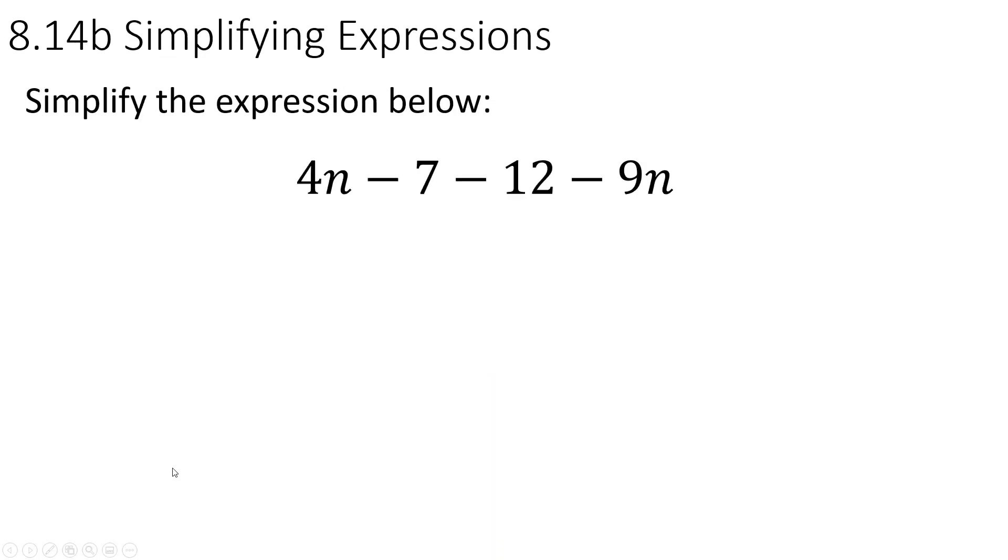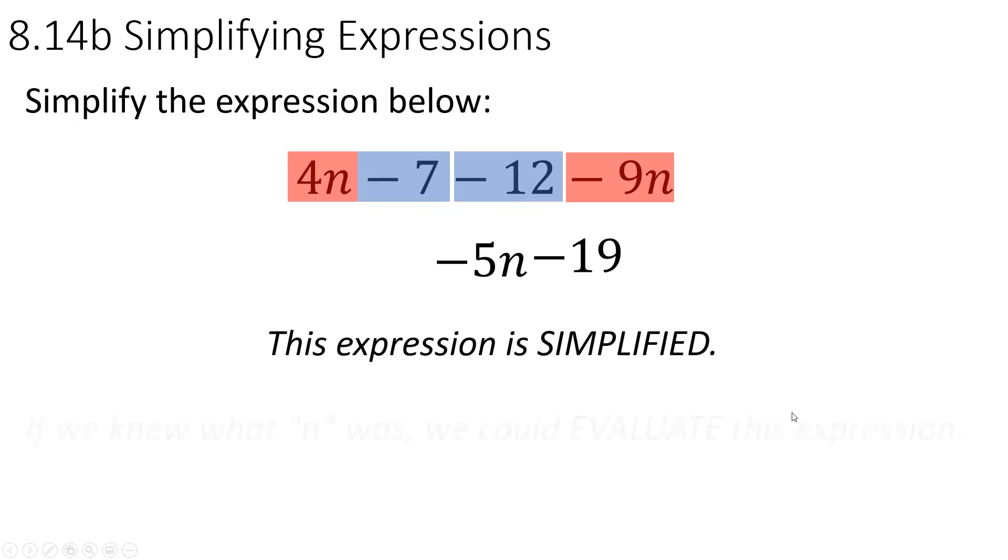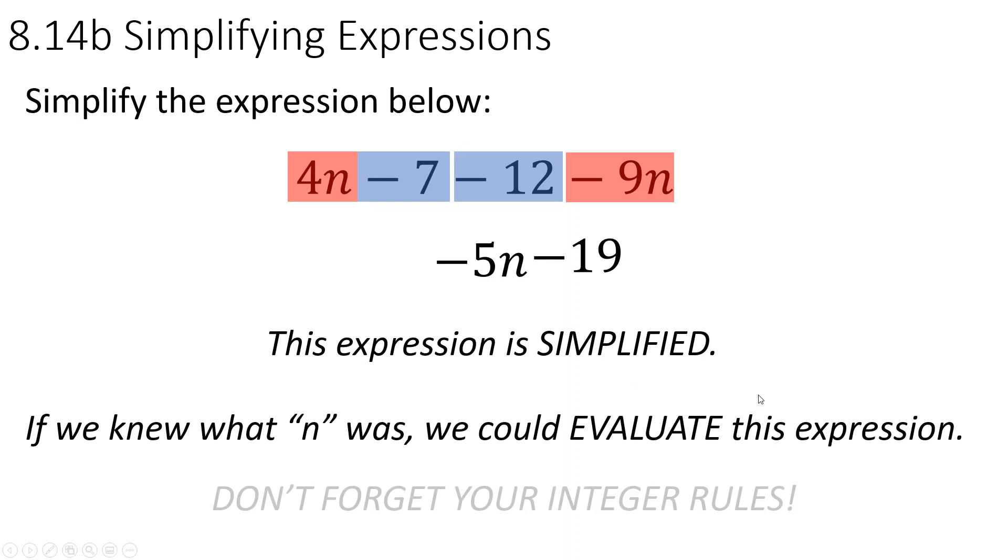Simplifying expressions. You're going to regroup your like terms. I see some n's. I see 4n. I see negative 9n. Keep track of your negatives. 4n and negative 9n put together give you negative 5n. Negative 7 and negative 12 get together and give you negative 19. You can't do much else with this. This is simplified. If you knew what n was, you could work it out to one number and evaluate. Just don't forget your integer rules.